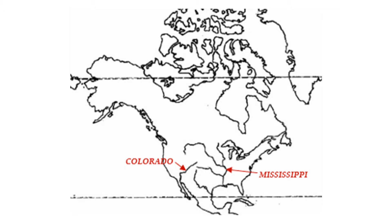This is the Mississippi River, which is going to the Gulf of Mexico. Then we have the Colorado River here. So in North America you have to learn two rivers: one is Mississippi and the other one is Colorado.